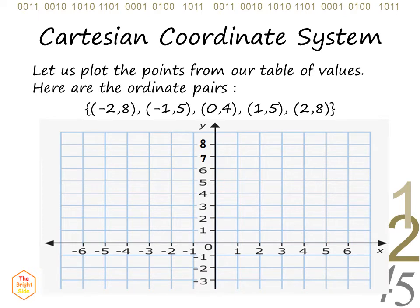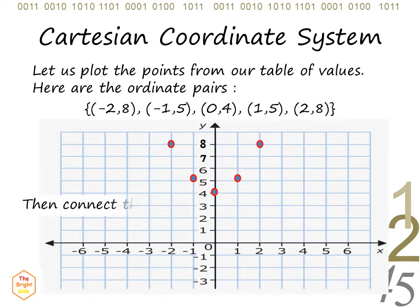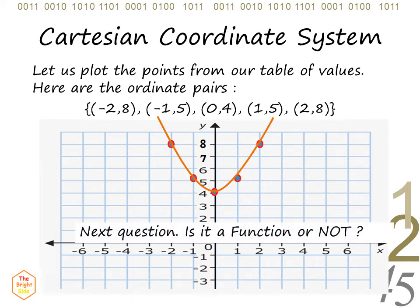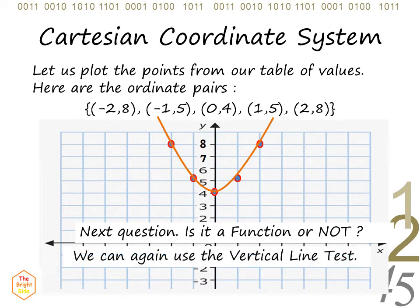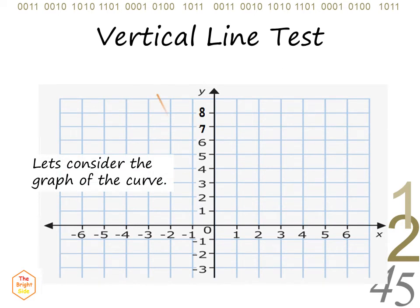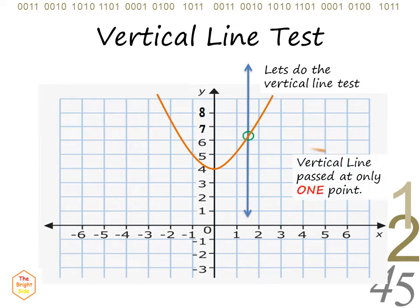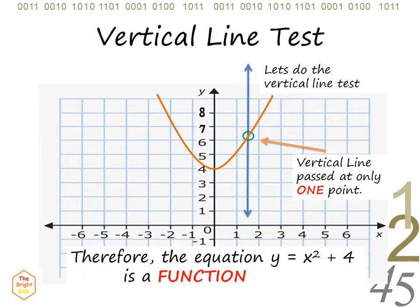Now, let us plot the points of the ordered pairs from our table of values. After plotting the points, notice that they form a curve. To determine if this is a function or not, we can use the vertical line test. Notice that the vertical line passed the given curve at only one point. Since there is only one point of intersection, equation number 2 is a function.